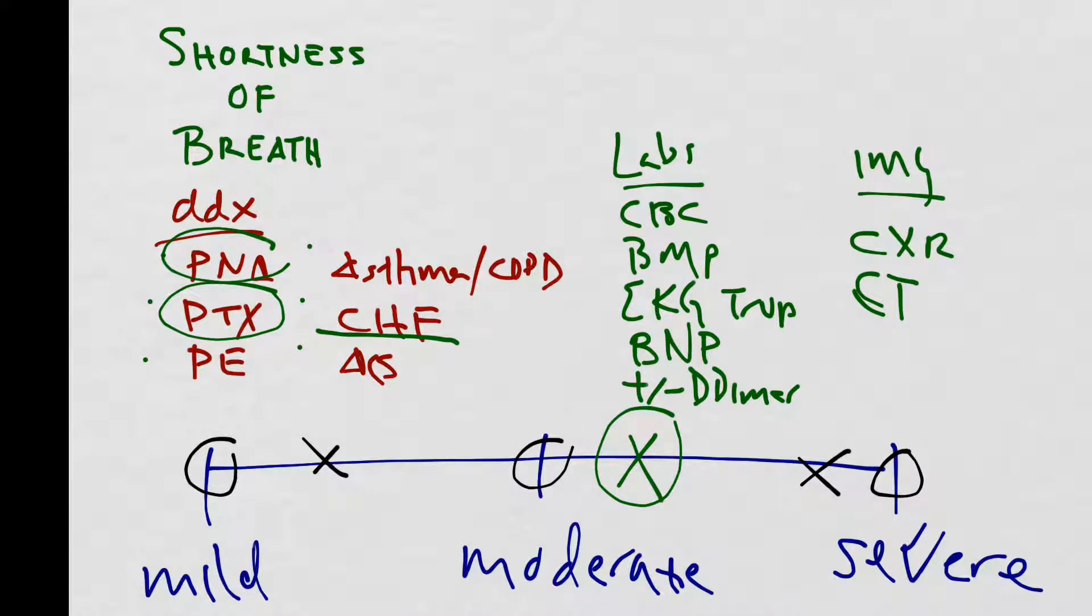Now, remember, all of this is meant to be a framework for you to figure out what your initial workup will be for this patient who is having shortness of breath. Based off of the history and physical, you may determine that your patient is having maybe an asthma exacerbation, and as a result, you wouldn't need to do any of these testings, but rather would just treat them and reassess to see if they become stable enough to go home.